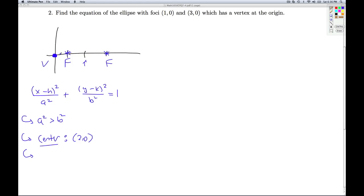What else do we know? How far did I go from the center in the x-direction to get to the vertex? I went 2 units. That means that the a's got to be 2. So a squared is 4. What else do I know? I know that from the center to each focus, it's 1 unit. That tells me that c is 1.